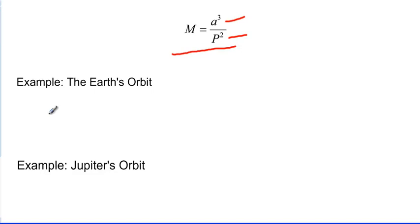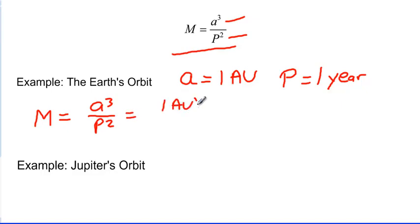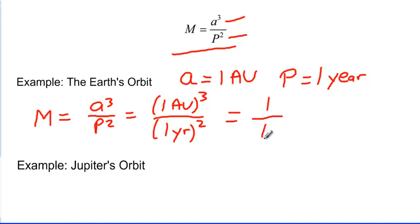Let's look at an example using Earth's orbit. For Earth, A is the distance from the Sun, which is one astronomical unit. P is how long it takes the Earth to orbit the Sun once — that's one year. Putting that into our equation, M equals a cubed over p squared, which is one AU cubed over one year squared. One to the third power is one, and one to the second power is one, so the mass equals one.